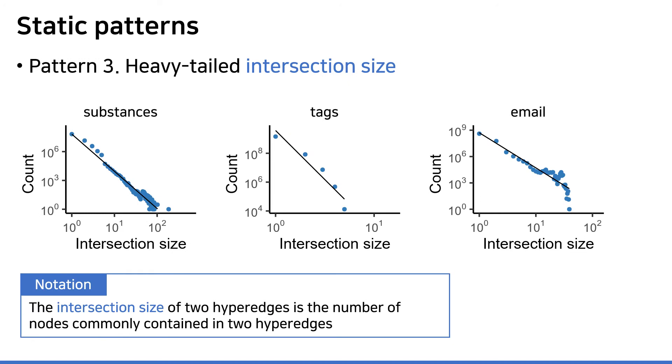The third static pattern is how the intersection sizes of two hyperedges are distributed. For a pair of hyperedges, their intersection size is the number of nodes common in both hyperedges. In other words, this quantity captures the frequency of the pairwise intersection sizes of hyperedges. The likelihood ratios together with the fitted line in the figure suggests that the truncated power-law is also the most probable description for this pattern.